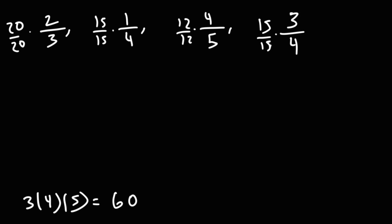So this will give us the same denominator of 60. Now let's multiply across. 20 times two is 40. 20 times three is 60. All the denominators will have a value of 60. 15 times one is 15. 12 times four is 48. 15 times three is 45.